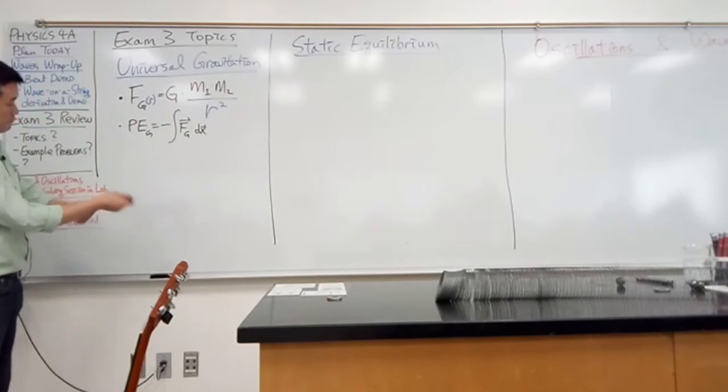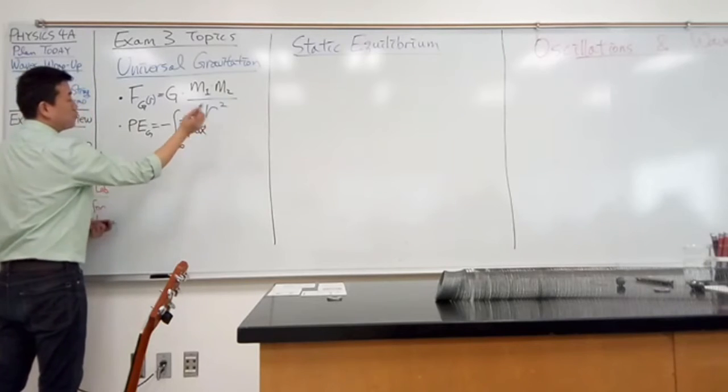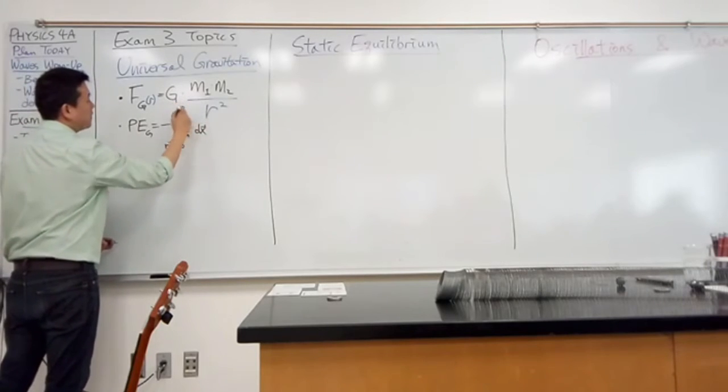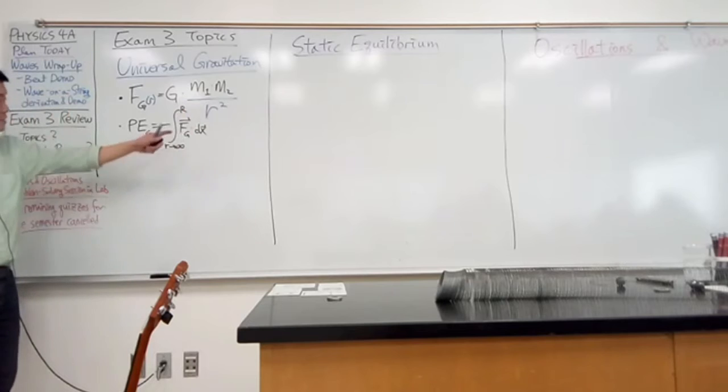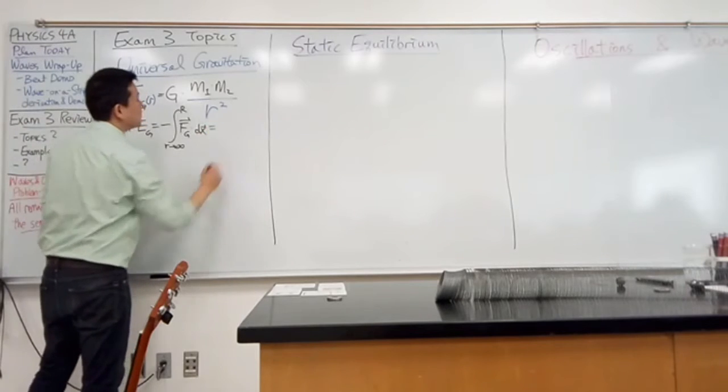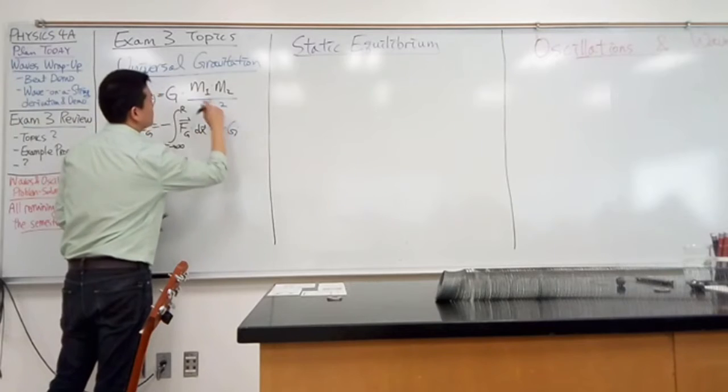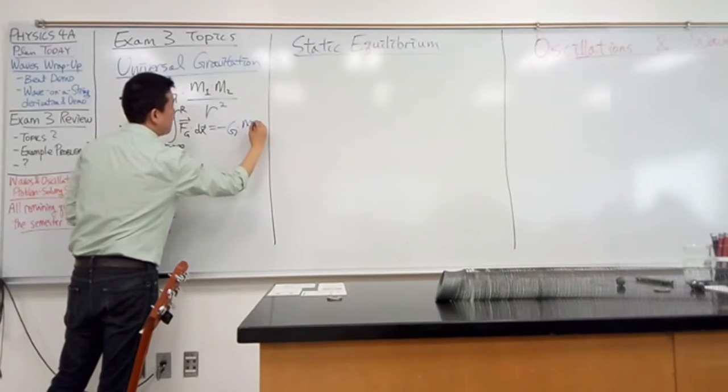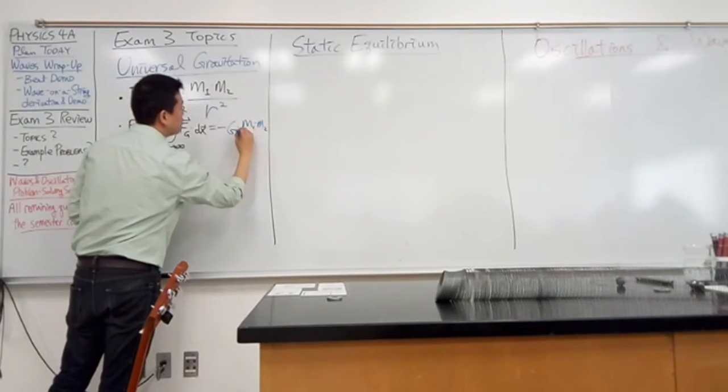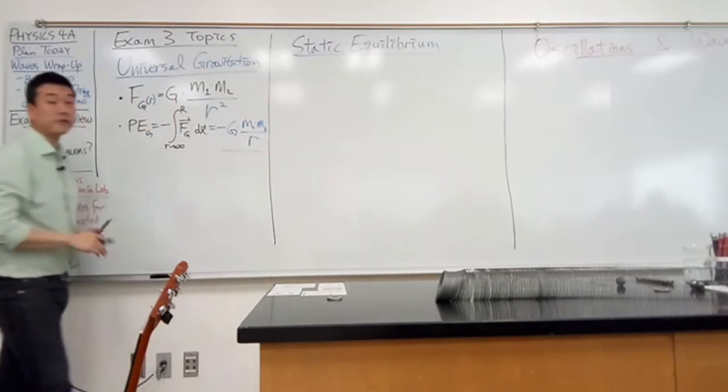So, imagine doing this from R very far away to some actual value of R that you are going to reach. When you do this calculation, so I remember now, this is the formula I gave you. The formula that you end up with is that gravitational potential energy is minus G times product of this, M1 times M2, over the distance R, just the R, not squared.